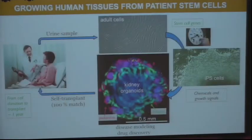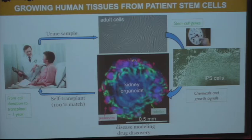The approach our lab is taking, as well as many others around the world, is to generate new human tissues from a patient's own cells. We're now taking urine samples from patients, deriving adult cells, and by introducing stem cell genes and growth signals, we can turn back the clock on these to what are called IPS cells — I think most people here are familiar with those.